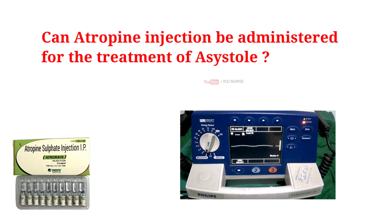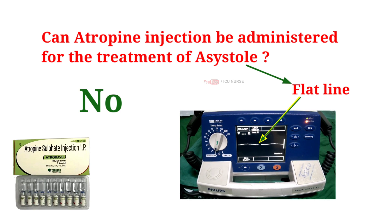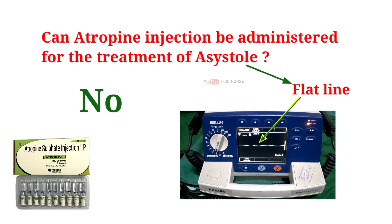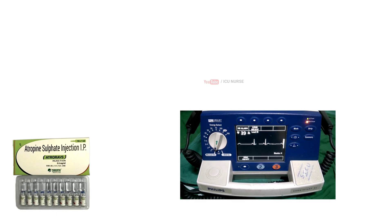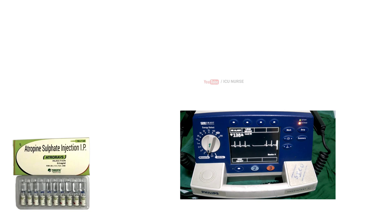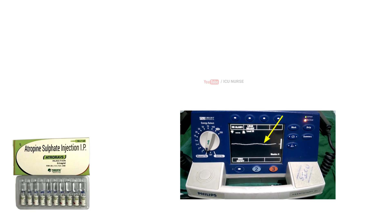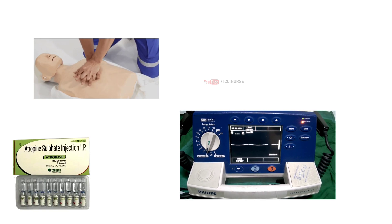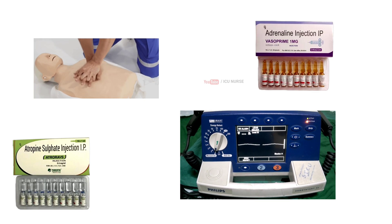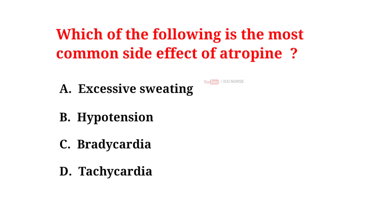Can atropin injection be administered for the treatment of asystole? No, atropin injection is not recommended for the treatment of asystole. Asystole, also known as flatline, refers to the absence of any visible electrical activity in the heart. It is considered a form of cardiac arrest. Atropin is primarily used to treat certain types of bradyarrhythmias such as sinus bradycardia or heart block by increasing heart rate through its effect on the vagus nerve. However, asystole is a complete absence of electrical activity and atropin does not have any beneficial effect in this situation. The recommended treatment for asystole is cardiopulmonary resuscitation along with the administration of epinephrine.